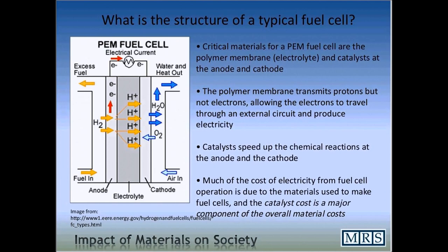The basic idea is that we want to separate those protons and electrons. The polymer membrane is designed so that it will transmit protons from one side of the fuel cell to the other side, as shown by the arrow. However, the electrons that are produced are unable to pass through that membrane, and they are diverted into an external circuit.